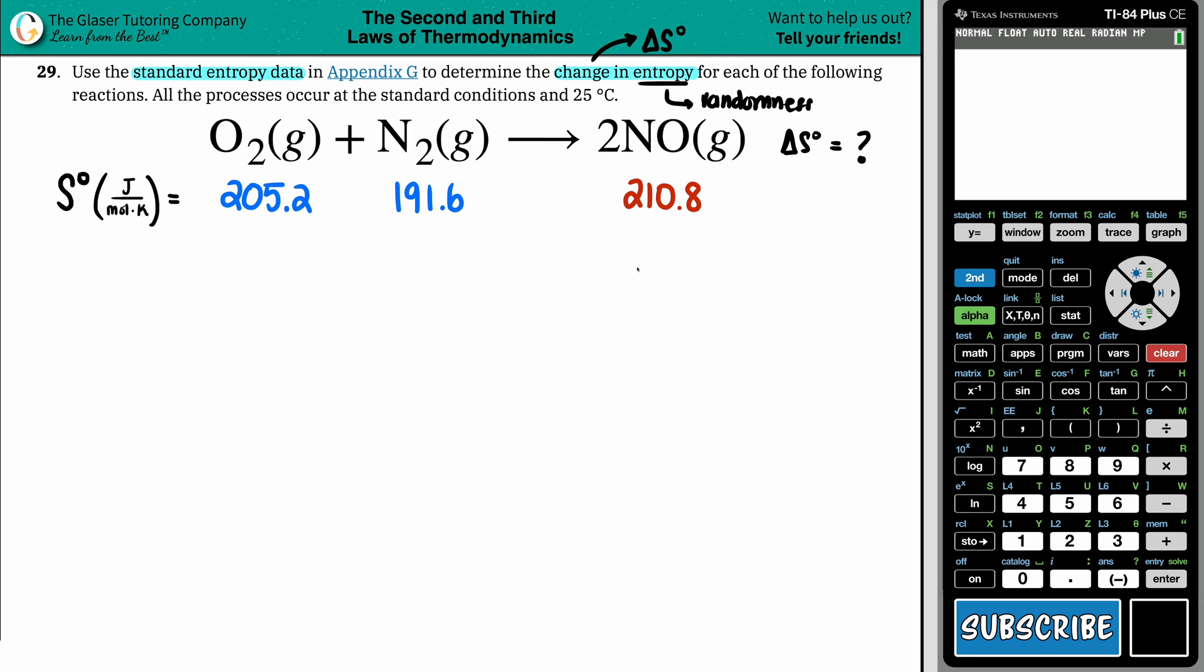Now what are we going to do with those values? We're going to use the standard equation, which is this right here. Whenever you want to find a delta S for an entire reaction, RXN is reaction, all you're doing is you're summing up, this symbol just means the sum, which is addition. So you're summing up all of your products and minus your reactants. So basically it's products minus reactants. Just got to add them up.